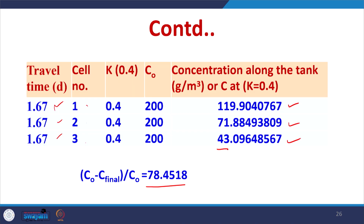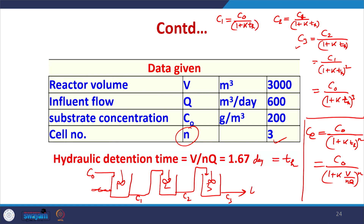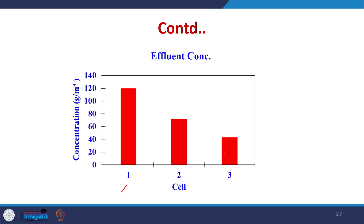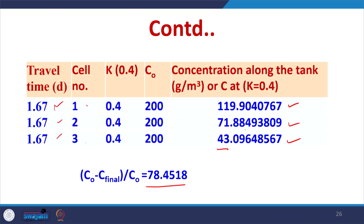The exit concentration with 3 cells in series is 43 g/m³, compared to 66.67 g/m³ when a single CSTR was used. When we use 3 cells there is a decrease in effluent concentration, meaning overall efficiency increases because the single CSTR volume has been divided into 3 equal cells in series. The concentration profile shows step-wise decrease through each cell.